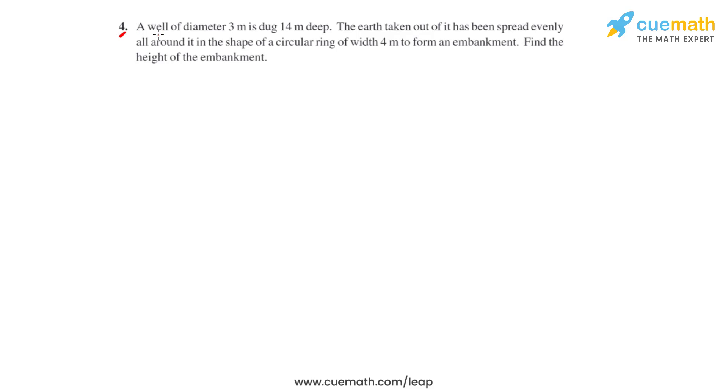Question number four: A well of diameter 3 meters is dug 14 meters deep. The earth taken out has been spread evenly all around it in the shape of a circular ring of width 4 meters to form an embankment. Find the height of the embankment.